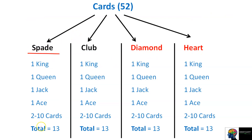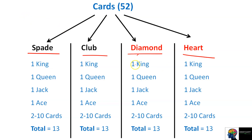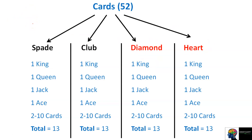In Spade there are 13 cards; same for Club, Diamond, and Heart — 13 each. Some questions come from a pack of cards, for example: find the probability of getting a diamond heart king. The total number of cards is 52. If we need a specific king — say the king of diamond heart — remembering our configuration, the probability will be 1 by 52.